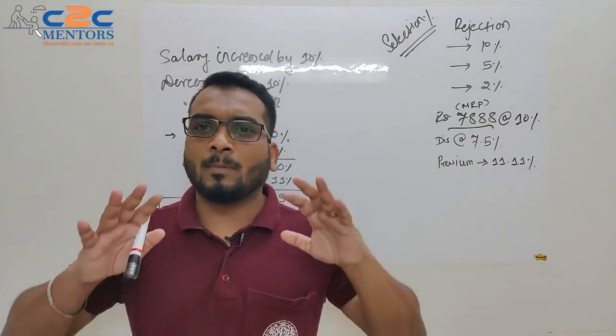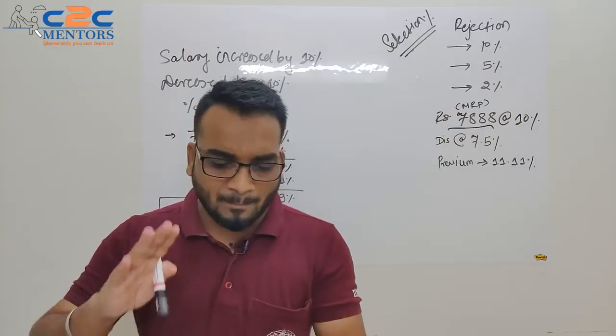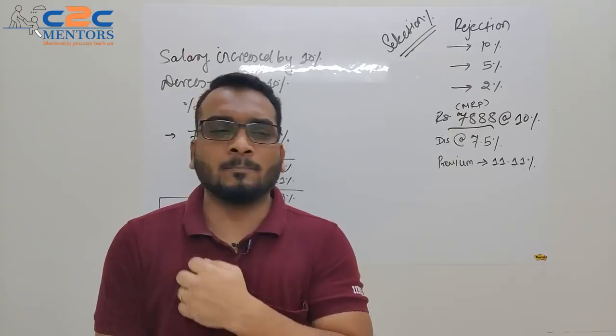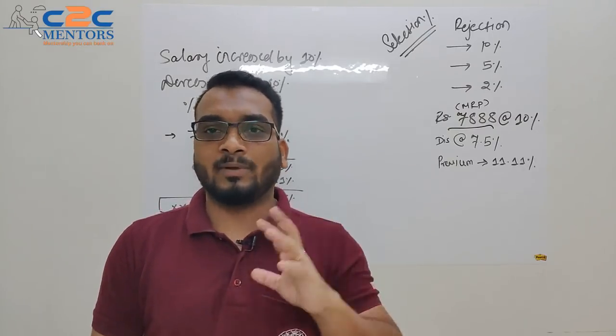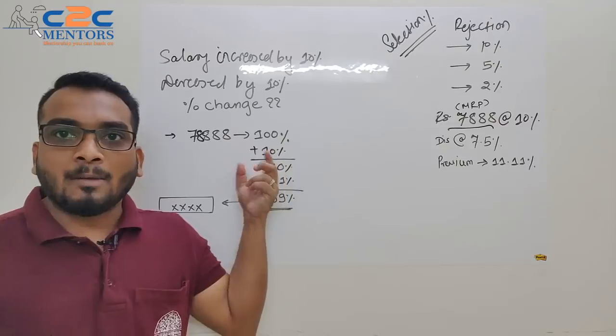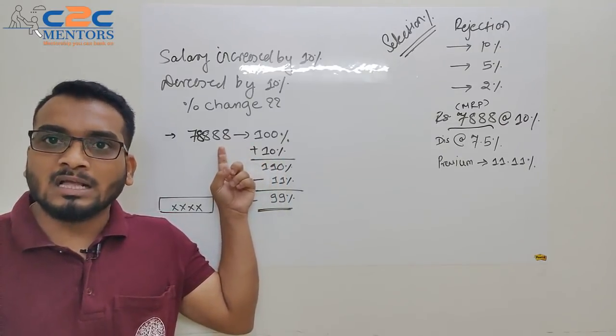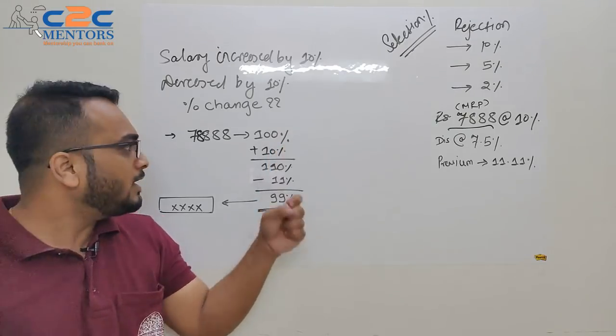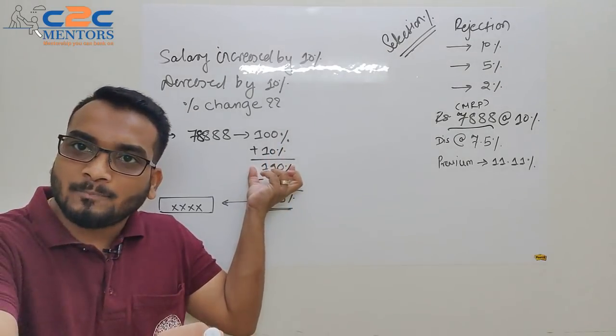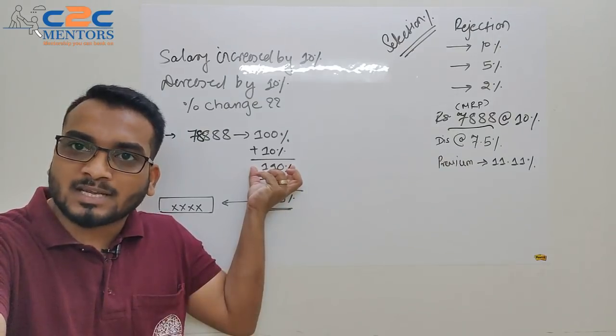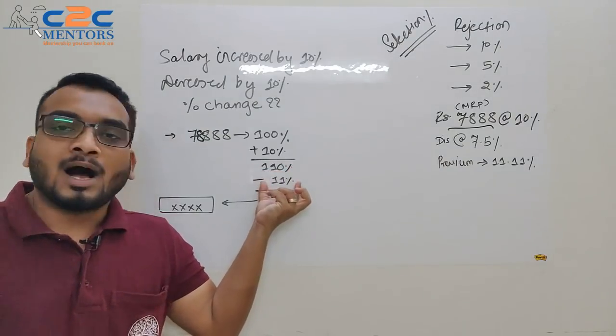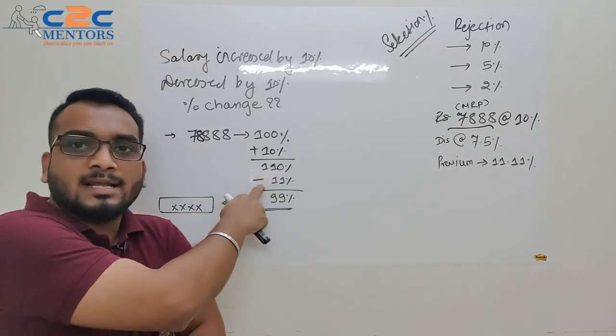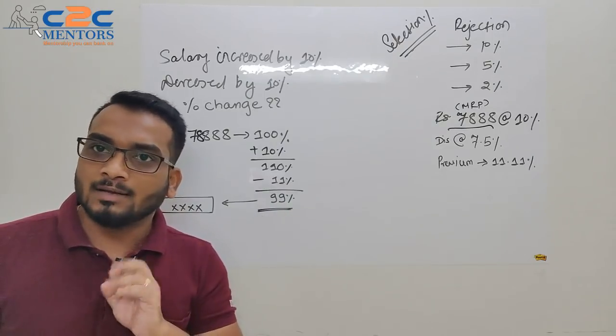Simple. What lot of people will do, they'll take 78,888 as a salary, they'll apply 10% on it, they'll get a new number. On that new number, they'll minus 10% decrease and they'll try to work it out. Now that's going to be too much work. So there is a funda that I teach in my online and classroom program. It's called as 100 as a base. Trust me, arithmetic's around 80% questions can be solved with this. Whether you do percentage, profit and loss, interest, time speed distance, time and work, ratio proportion, mixture and allegation, any approach is 100%.